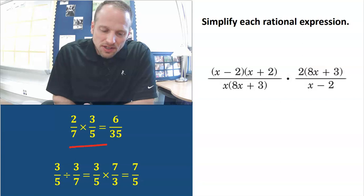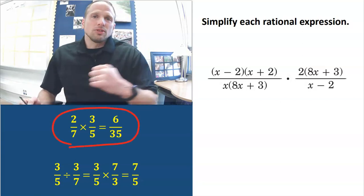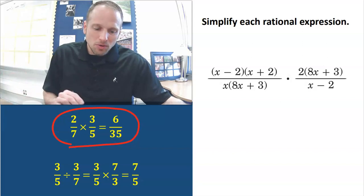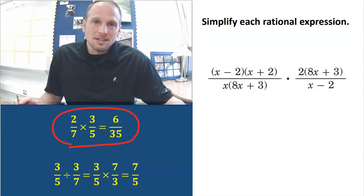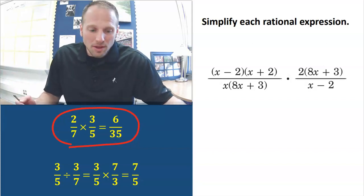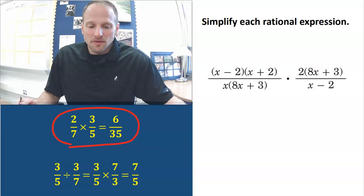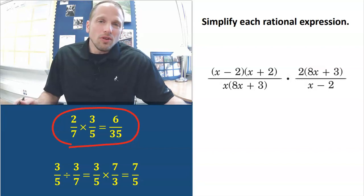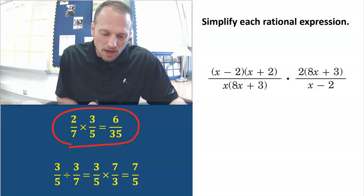Let's talk about what we already know how to do. From elementary school, you remember how to multiply fractions, right? When you're multiplying a fraction, all you got to do is multiply the top across. Multiply 2 times 3 and you get 6, and multiply the bottom: 7 times 5 is 35. That's all you have to do. When you divide fractions, it's just slightly more complicated.